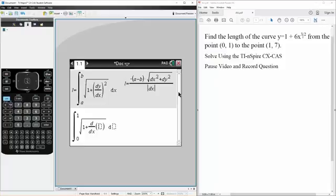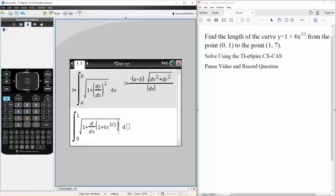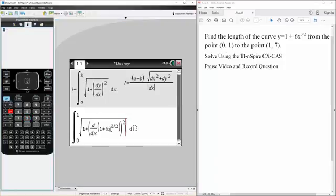And that is going to be this, 1 plus 6x raised to 3 halves, and this is going to be squared, plus, in terms of dx.